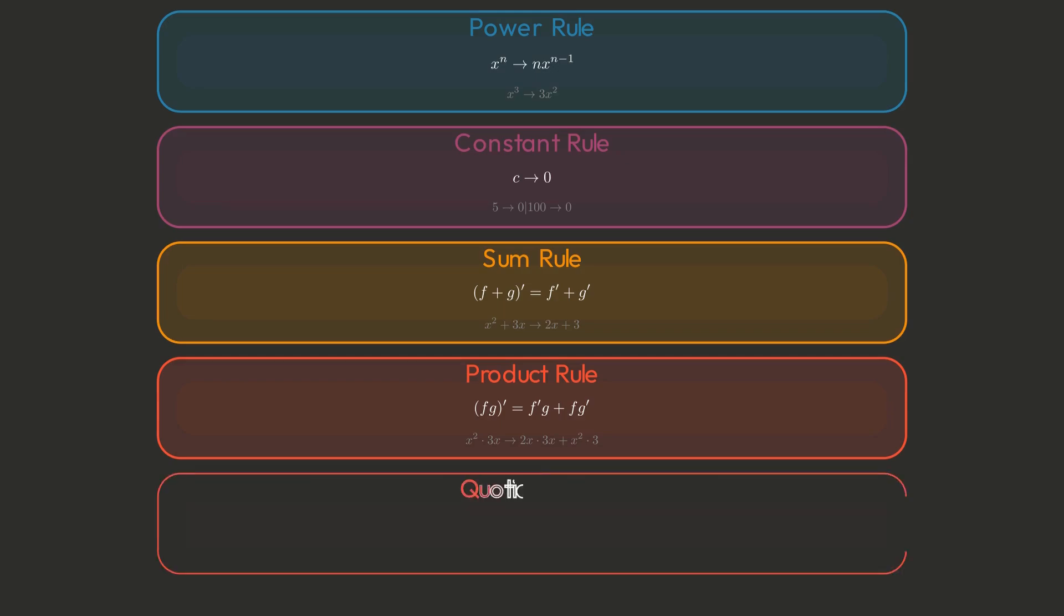To differentiate a fraction, use the quotient rule. For x squared over x plus 1, that's 2x times x plus 1, minus x squared times 1, simplifying to x squared plus 2x over x plus 1 squared.